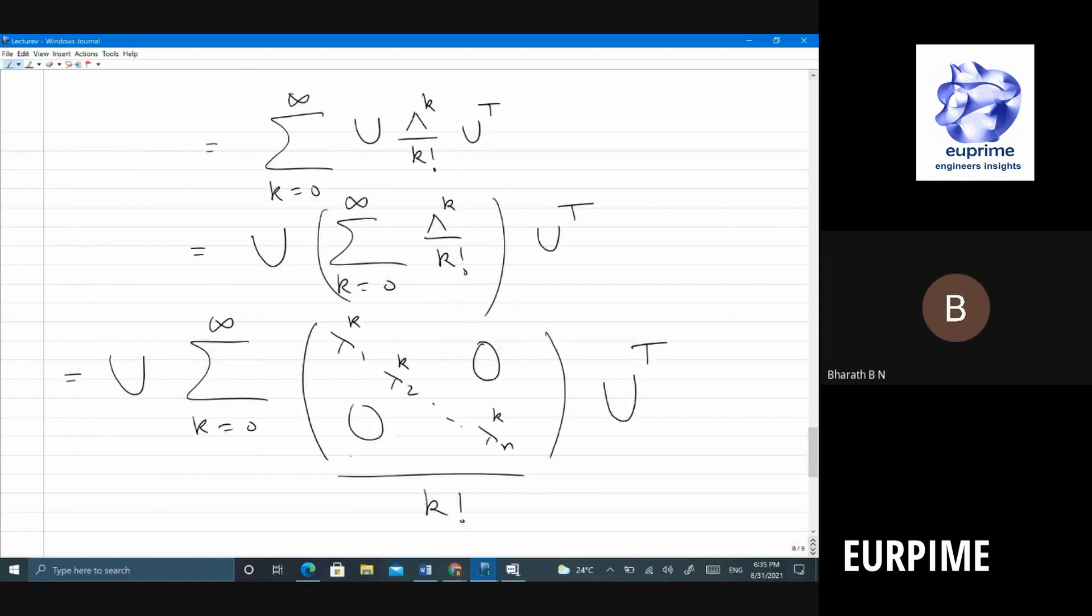So what is that? If I pull this summation inside, what will happen? Summation k equal to 0 to infinity lambda 1 power k or k factorial. What is that? E power lambda 1, e power lambda 2, e power lambda 3. So you get e power. Right? It is an exponential.